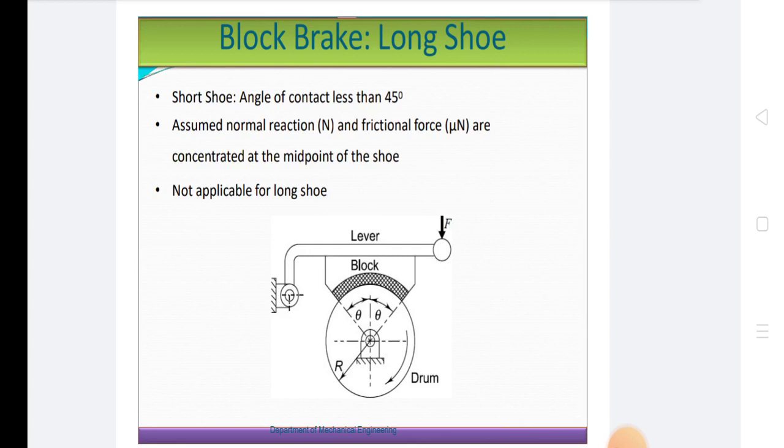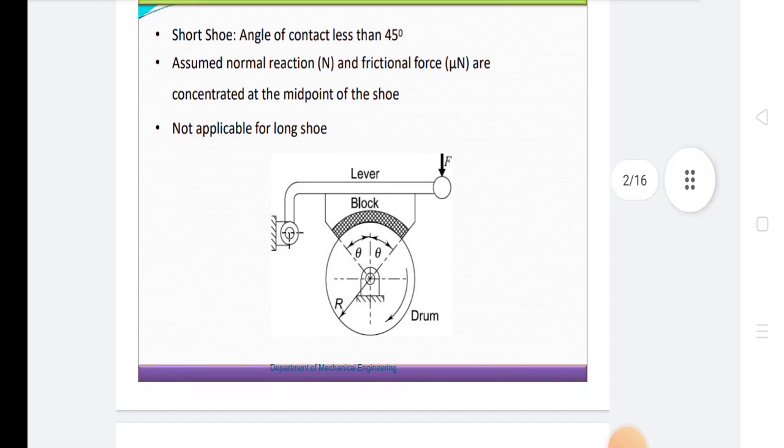These brakes are commonly used in railway trains, tram cars, and bicycle. The block or shoe brakes are further classified as single block brake, double block brake, and pivoted block brakes.